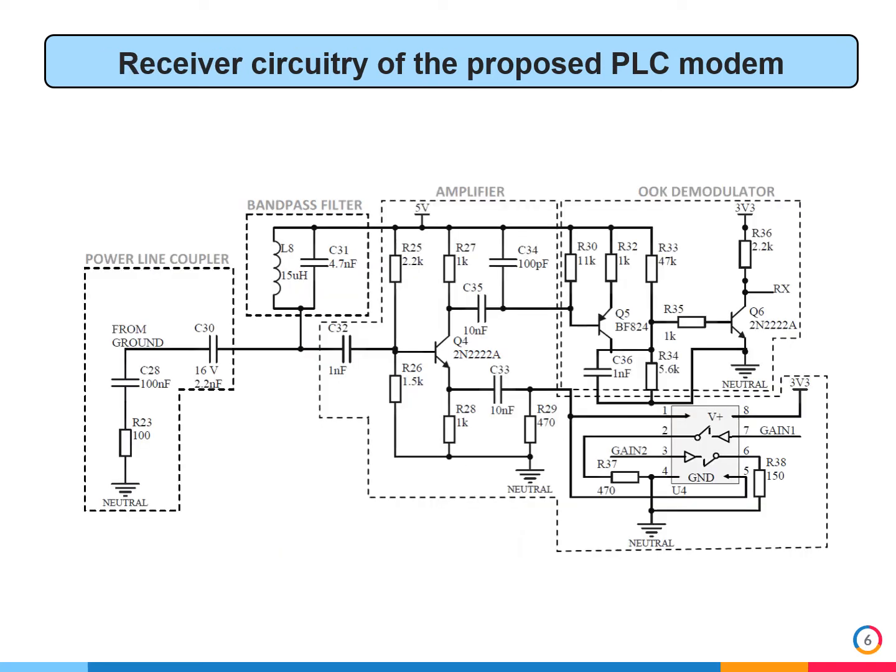The receiver circuitry is also very simple, composed of only three transistors, 14 resistors, eight capacitors, one inductor, and one analog switch. This circuitry has the capability to automatically adjust the gain of the receiver, and it allows for the application of the system in places with different noise levels and attenuation.